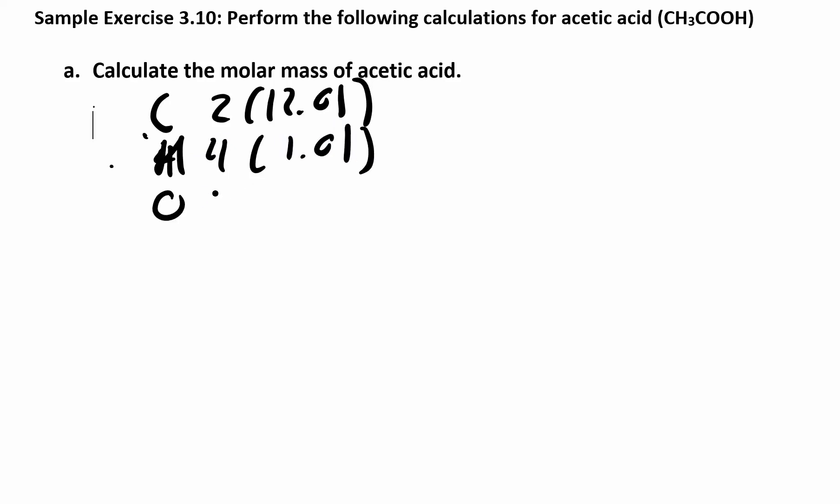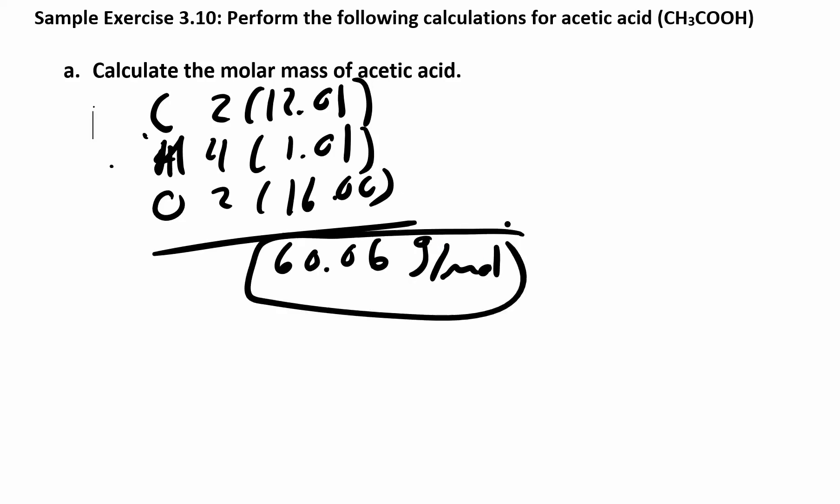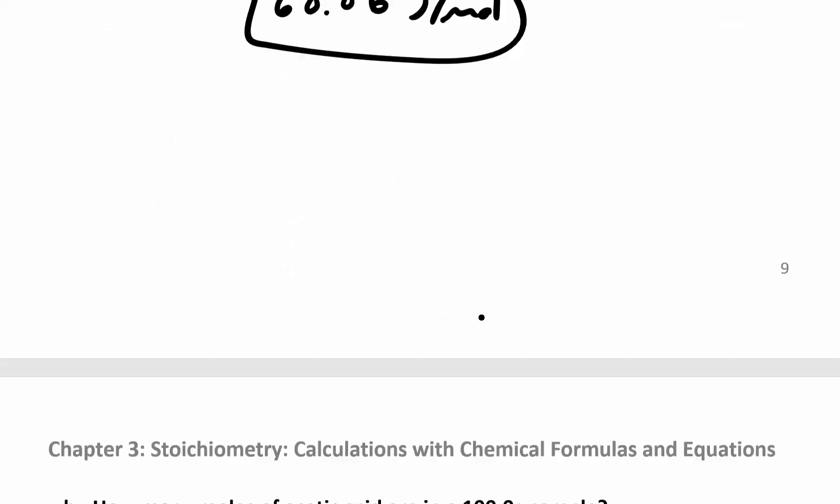And we have two oxygens, 2 times 16. When you add all that up—two times 12.01, four times 1.01, two times 16—you should get 60.06 grams per mole. So first step should be pretty easy, find the molar mass.